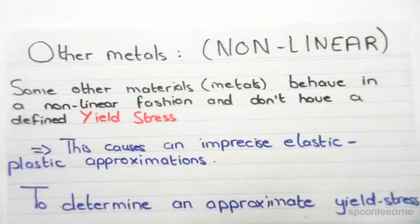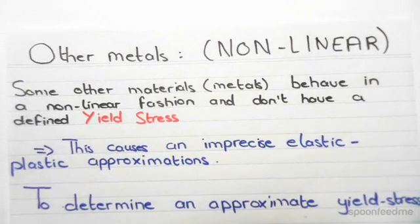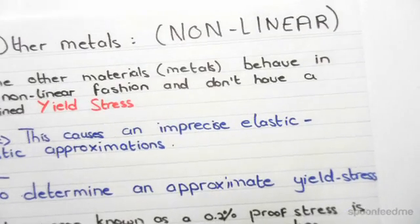Now some other metals can behave in a nonlinear fashion and they don't have a defined yield stress. The problem with this is that it causes an imprecise elastic plastic approximations and the challenge is to determine appropriate yield stress.